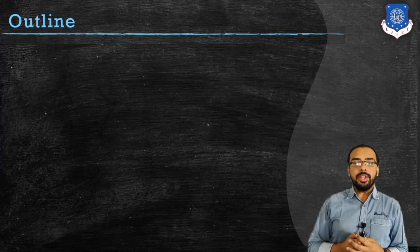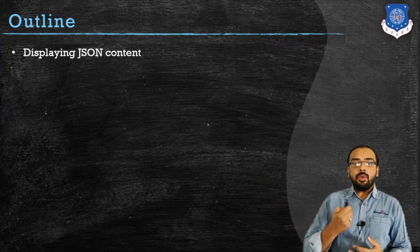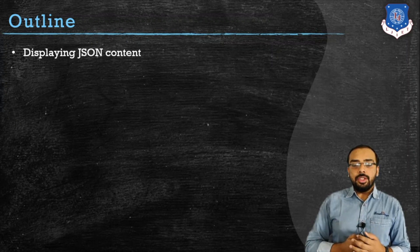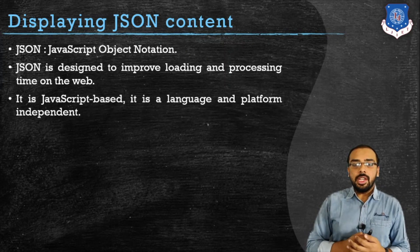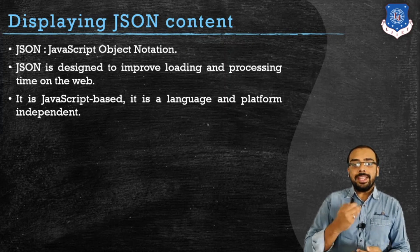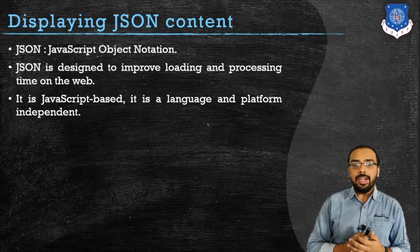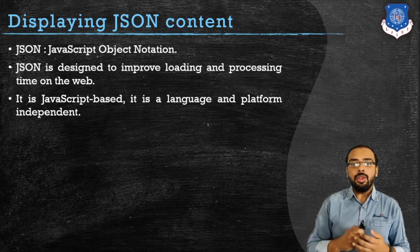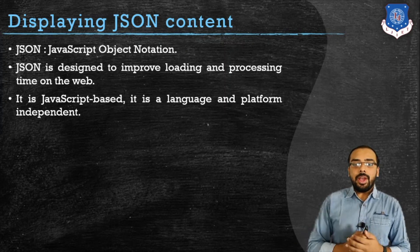Today's outline is displaying JSON content. Before displaying the content of JSON, let us understand what JSON is. JSON stands for JavaScript Object Notation. It is a language based on JavaScript and it is platform independent, meaning the code works irrespective of the operating system or system that you are using.